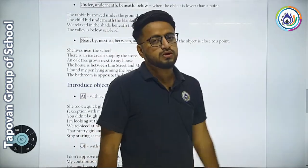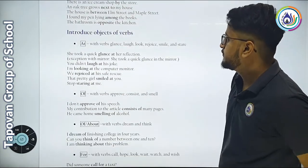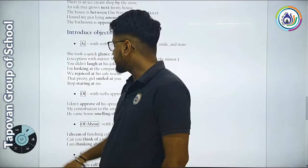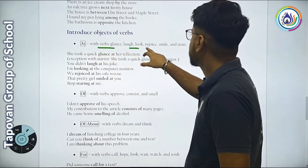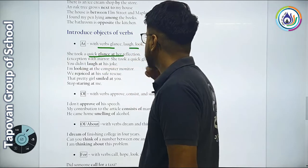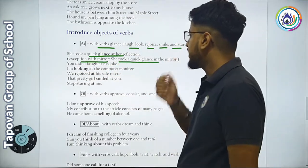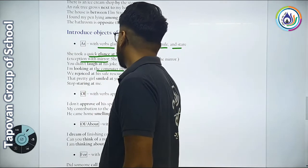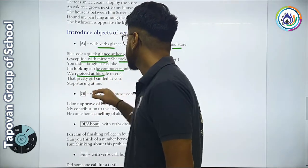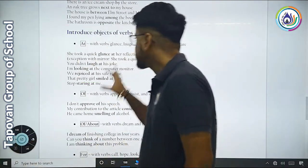Introducing object of verb. At is used with verbs glance, laugh, look, rejoice, smile, and stare. She took a quick glance at her reflection. You didn't laugh at his joke. I am looking at the computer monitor. We rejoice at his safe rescue.